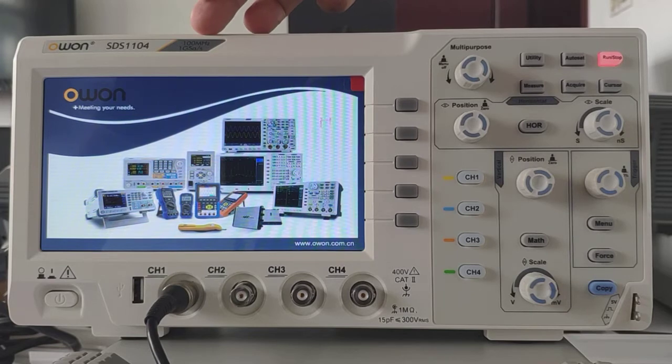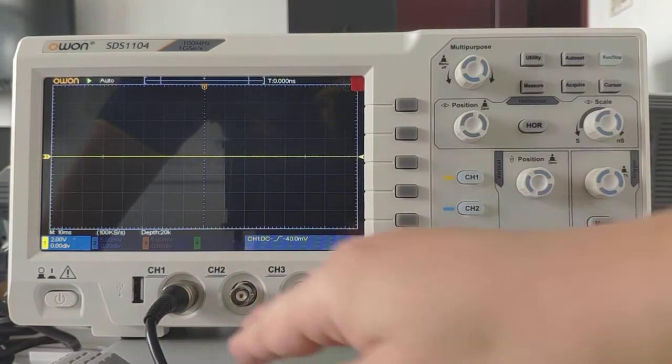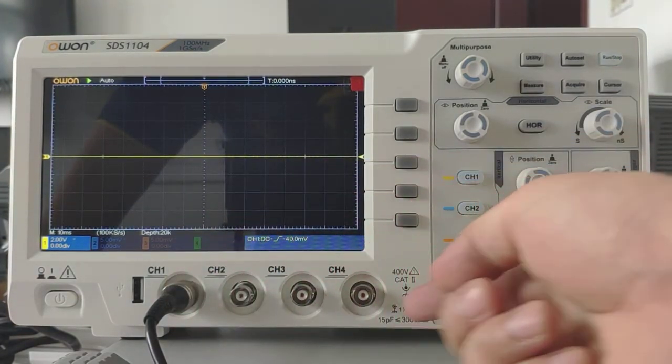Bandwidth is 100 MHz with 1 gigasample rate. It is a four-channel oscilloscope.